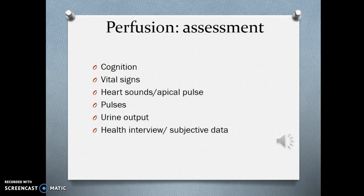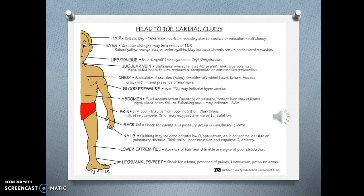Urine output is important — one of the biggest changes you're going to see after vital sign changes with a change in cardiac output is an alteration in urine output, because the kidneys receive a lot of the blood supply and when it drops, urine output drops. There's also your health interview or subjective data — things that your patient tells you that point you in the direction of an alteration in perfusion. Different cardiac clues can be thought about when doing a head-to-toe assessment, as many things from head to toe will be altered with an alteration in perfusion.